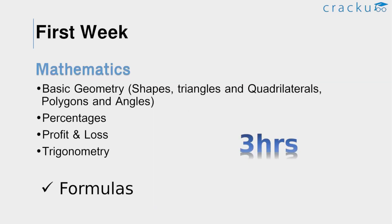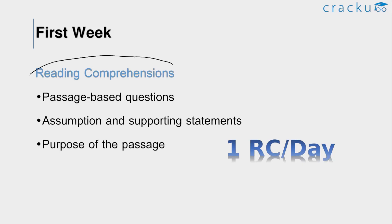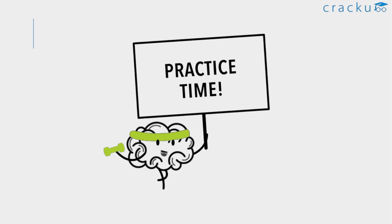For the first week, our first priority is to concentrate on Mathematics and Logical Reasoning. The main topics in Mathematics are basic geometry, percentages, profit and loss, and trigonometry. In basic geometry, focus on shapes, triangles and quadrilaterals, polygons and angles. Make sure you are aware of each and every formula. Spend a minimum of three hours on Mathematics. For English Proficiency, Reading Comprehensions are the best source for scoring, so try to solve at least one RC per day.